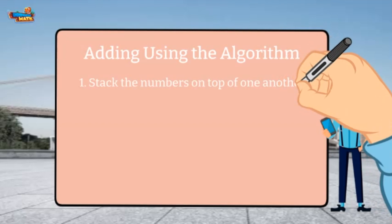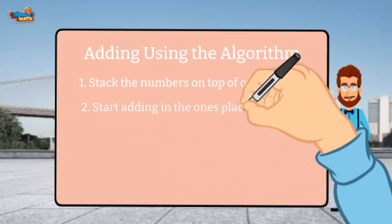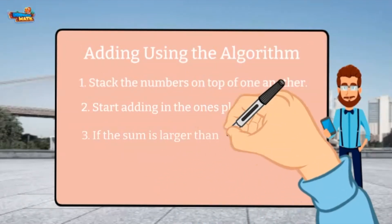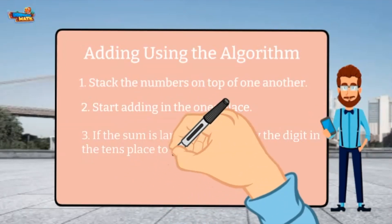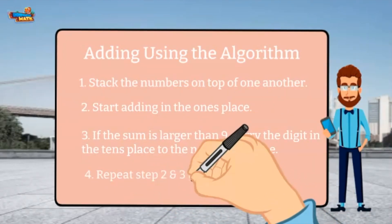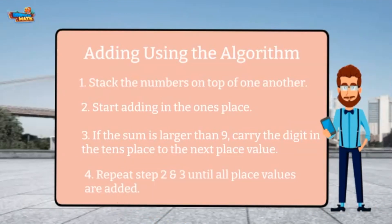First, stack the numbers on top of one another. Start adding in the ones place. If the sum is larger than 9, carry the digit in the tens place to the next place value. Repeat steps 2 and 3 until all place values are added.